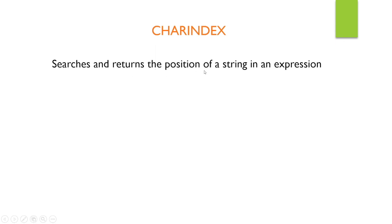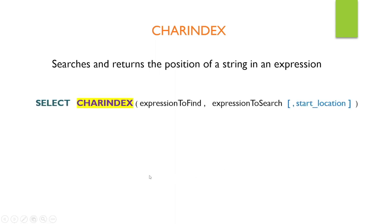The next one is CHARINDEX. It searches and returns the position of a string in an expression. If it finds the position, it gives you the location. If it doesn't find it, zero is returned. The syntax is SELECT CHARINDEX, then the expression you want to find, and the expression to search. The start location is optional — if you specify it, the search begins from that position; otherwise it starts from the left.